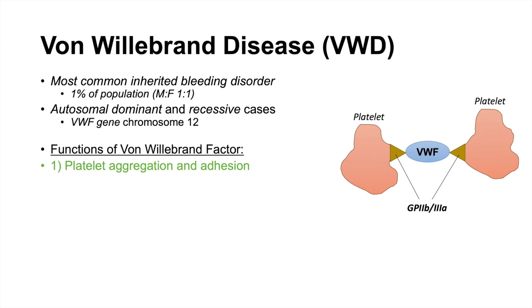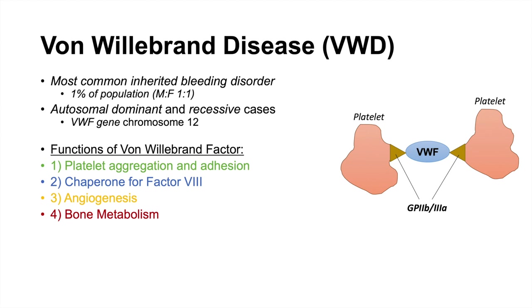Von Willebrand factor also acts as a chaperone for factor VIII. It can regulate angiogenesis and is important in bone metabolism. The von Willebrand factor–factor VIII complex has been shown to inhibit RANKL-induced osteoclastogenesis. Von Willebrand factor is stored in Weibel-Palade bodies — vesicles located in the endothelium — and can be released into circulation.